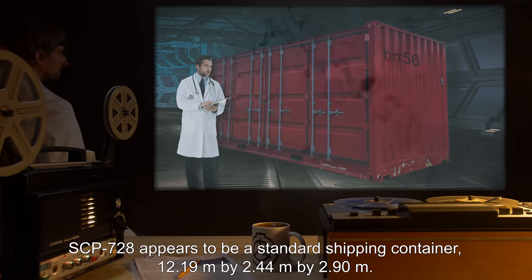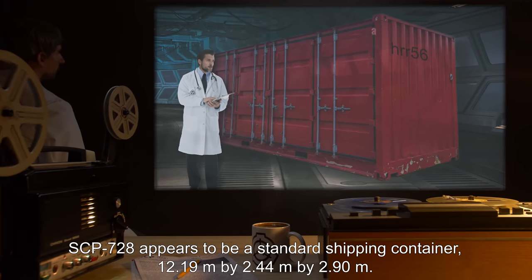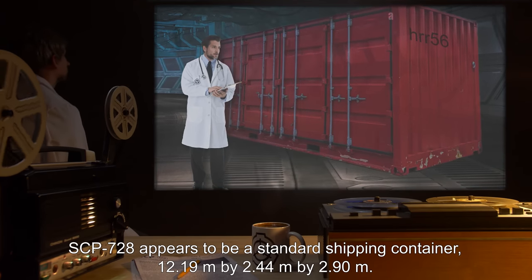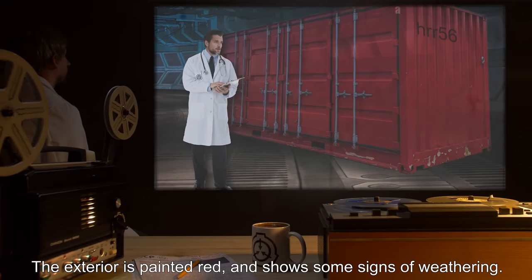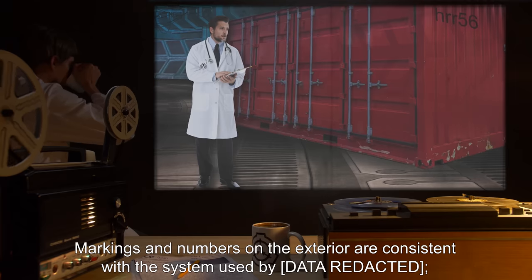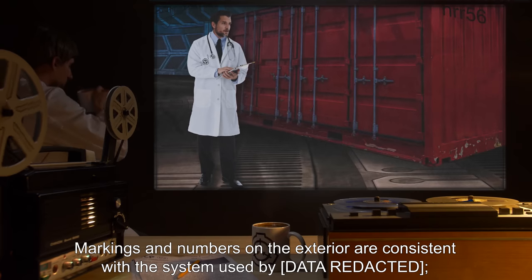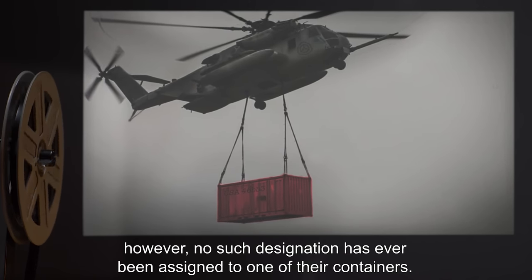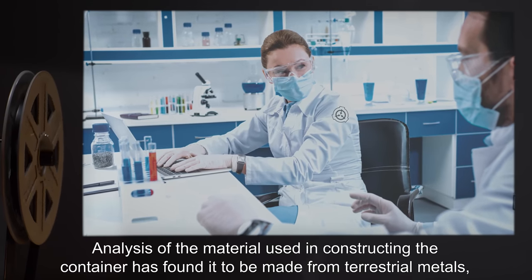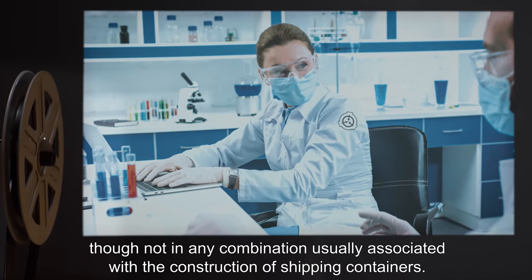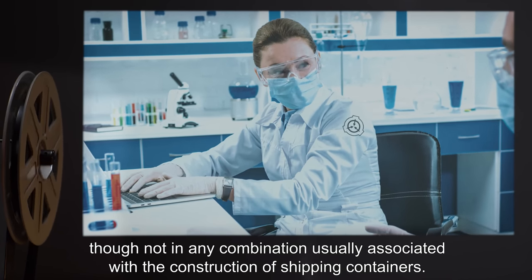Description: SCP-728 appears to be a standard shipping container, 12.19 meters by 2.44 meters by 2.90 meters. The exterior is painted red and shows some signs of weathering. Markings and numbers on the exterior are consistent with the system used by [REDACTED]. However, no such designation has ever been assigned to one of their containers. Analysis of the material used in constructing the container has found it to be made from terrestrial metals, though not in any combination usually associated with the construction of shipping containers.